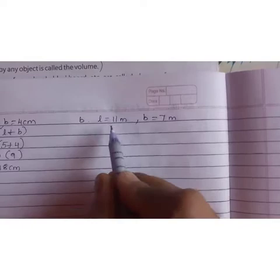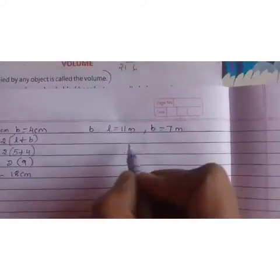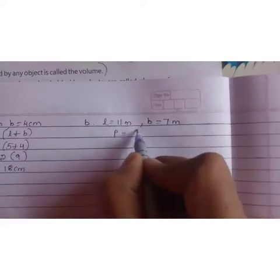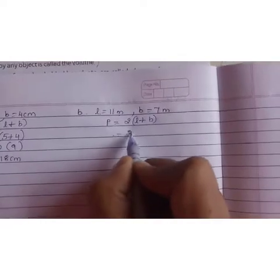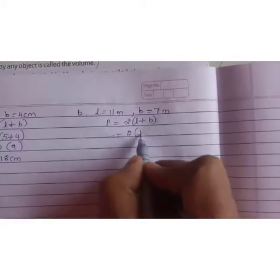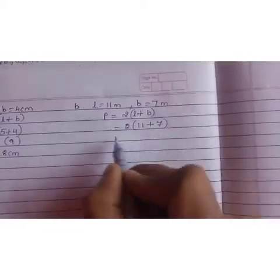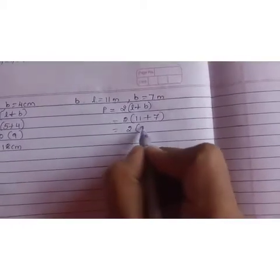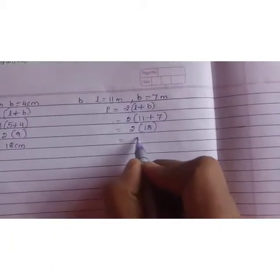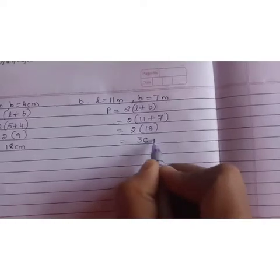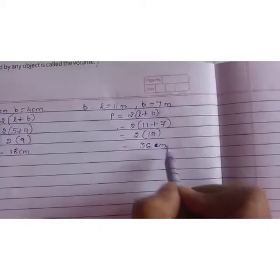Next question we have B. Length equals 11 meters, breadth equals 7 meters. So we have perimeter equals 2 into bracket L plus B, length plus breadth. 2, length is 11, breadth is 7. 2 bracket 11 plus 7 is 18. 2 into 18 is 36 and the unit is meter. So write meter.